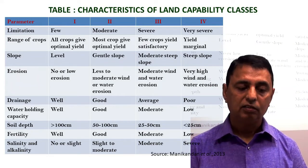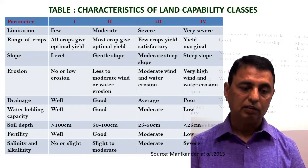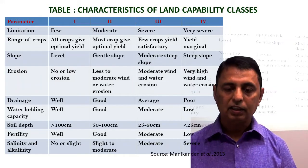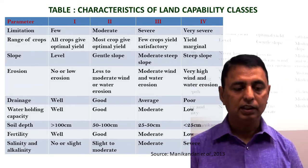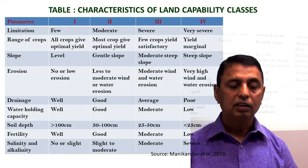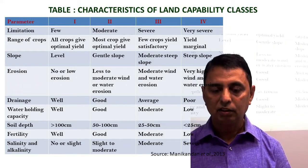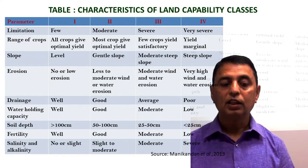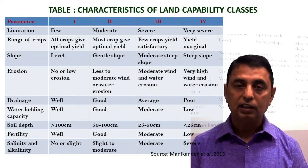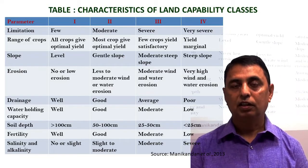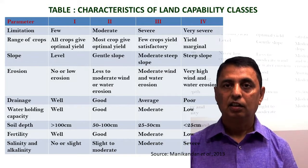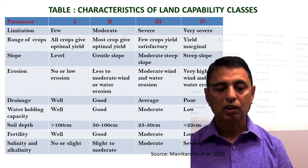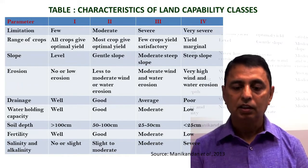For drainage conditions: class 1 is very good, class 2 is good, class 3 is average, and class 4 has poor drainage. For water holding capacity: class 1 is very good, class 2 good, class 3 moderate, and class 4 low. For soil depth: class 1 has more than 100 cm depth, class 2 has 50 to 100 cm, class 3 has 25 to 50 cm, and class 4 has less than 25 cm soil depth.